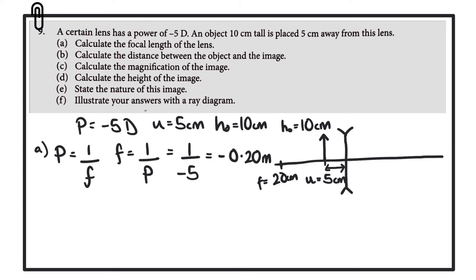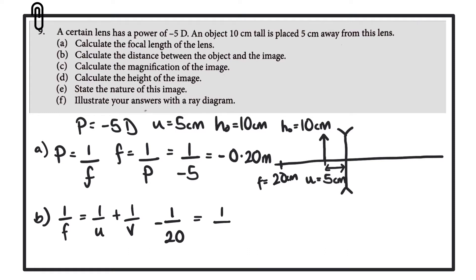Part B: calculate the distance between the object and the image. For this we're going to need to make use of the lens equation, which is that 1 over F is equal to 1 over U plus 1 over V. For this equation, I'm going to keep all the numbers in centimeters, which means that any answer I get out will also be in centimeters. 1 over F is 1 over 20 centimeters, but remember this was a diverging lens, so this number is negative. That's equal to 1 over U, U being the object distance, so that is 5 centimeters, and that object distance is positive.